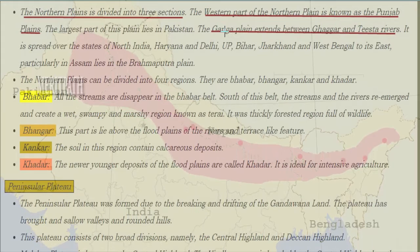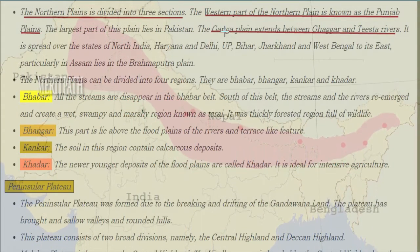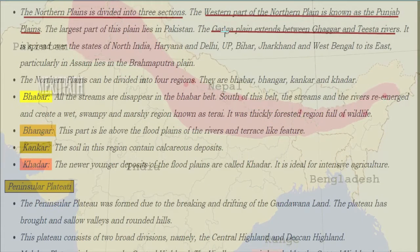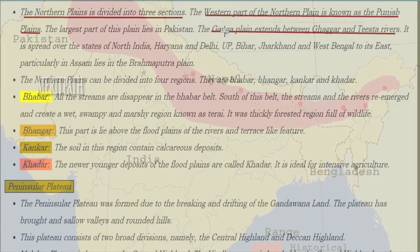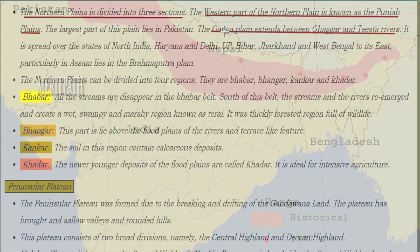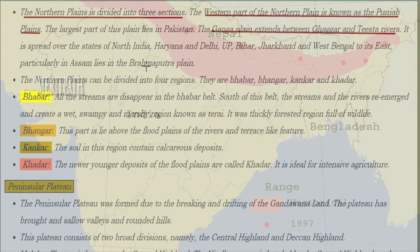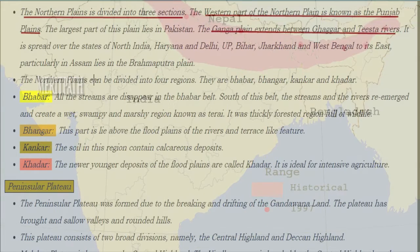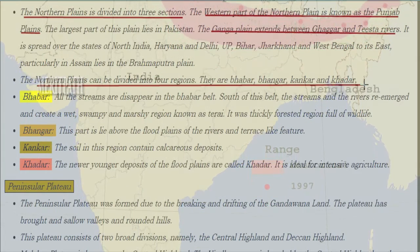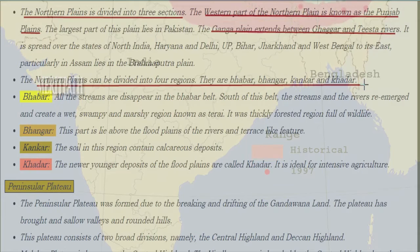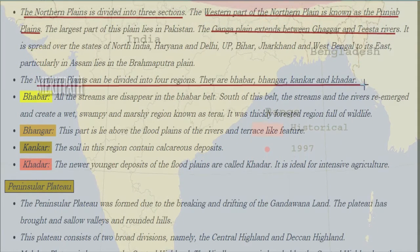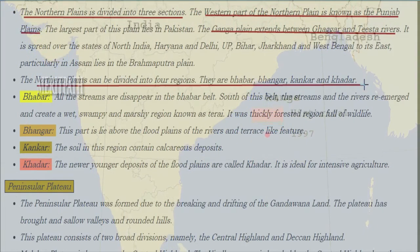The Northern Plains are divided into three sections. The western part is known as Punjab Plains, with the largest part lying in Pakistan. The Ganga Plain extends between the Ghaggar and Teesta rivers, spread over states of Haryana, Delhi, UP, Bihar, Jharkhand and West Bengal. Particularly in Assam lies the Brahmaputra Plain.